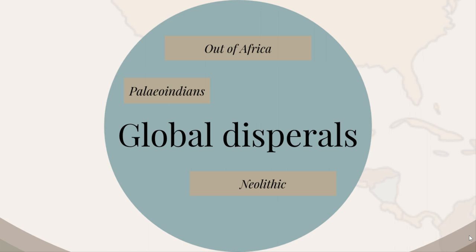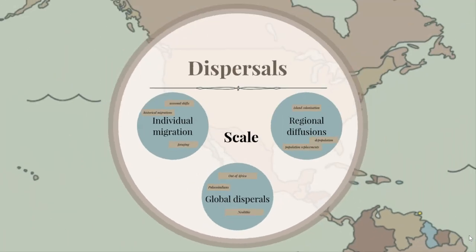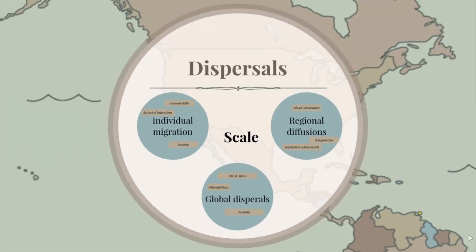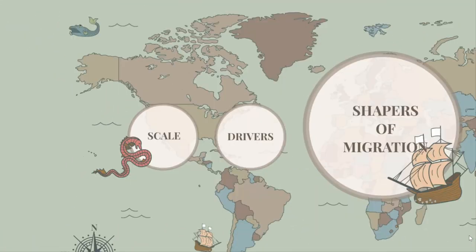Then we have global dispersal events such as Out of Africa — my favorite — the spread of the Neolithic, or the Paleo-Indians coming into the Americas. At this scale we don't look at households; we look at gigantic flows where one time step in my simulation is like 1,000 years. We're talking about population and species-wide dispersals. For each of these scales there are different units and components we use to build our dispersal models.